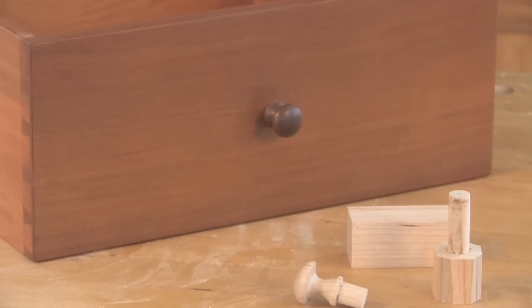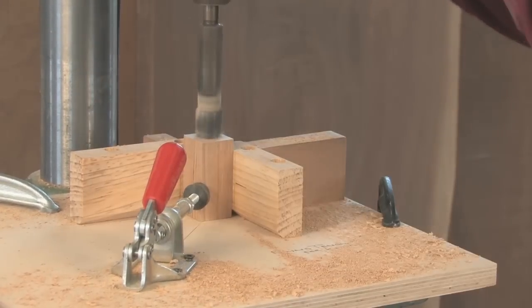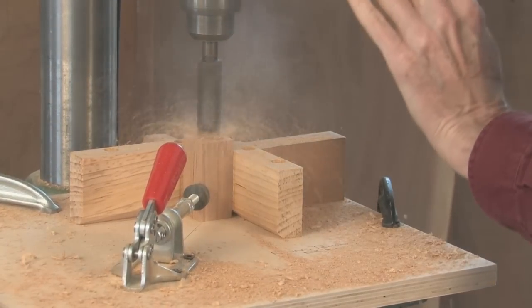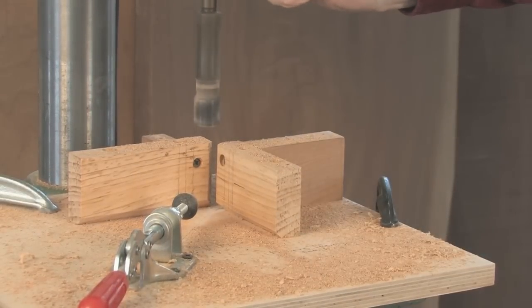The only really critical part to making a knob is turning the tenon. A half-inch tenon has to fit in a half-inch hole. So I made a little jig to fit under the drill press, something that holds the blank upright.